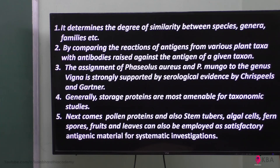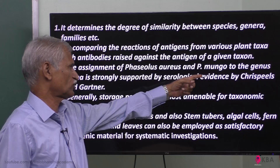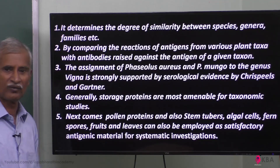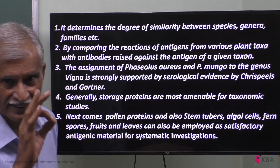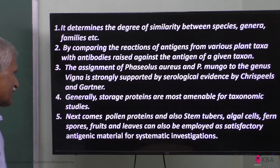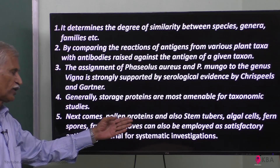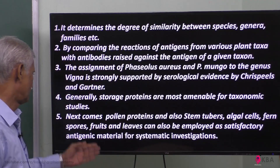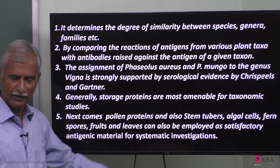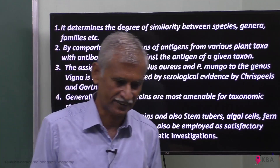For example, Phaseolus aureus and Phaseolus mungo both belong to one genus — and serotaxonomy has proved this by showing the same antigen-antibody reaction for both. Generally, storage proteins are most suitable for taxonomic studies. Next comes pollen protein, stem tubers, algal cells, fern spores, and fruits and leaves, which can also be employed for this serological study as satisfactory antigenic material for systematic investigation.